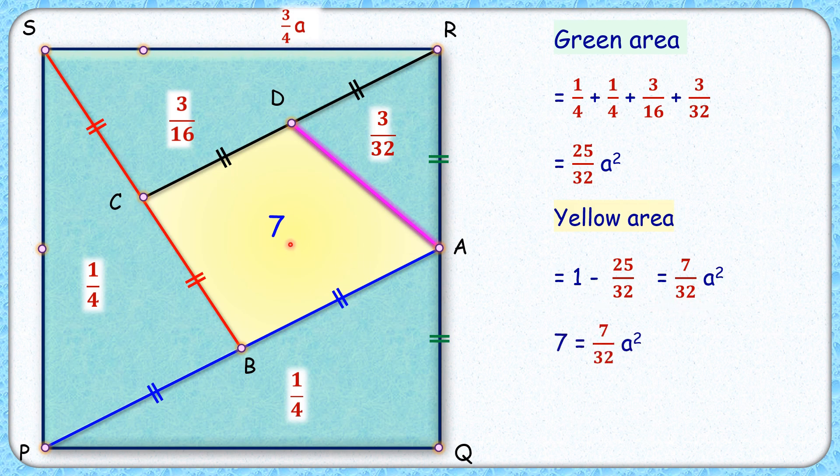So equating this with 7, we'll get A square is nothing but 32 centimeter square. And that's the area of the square we were looking forward to.